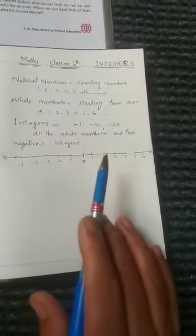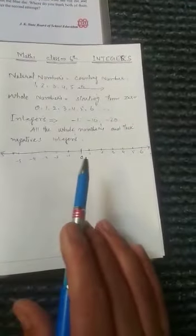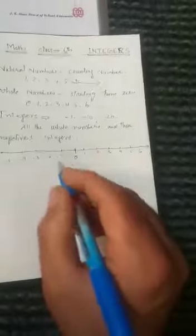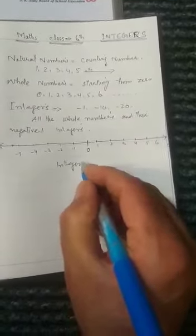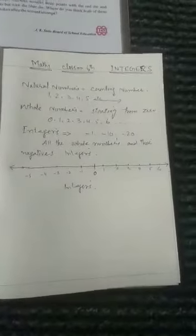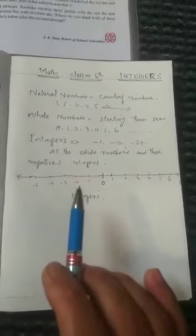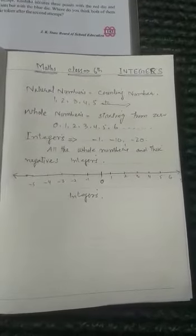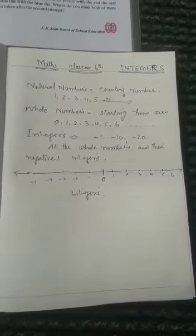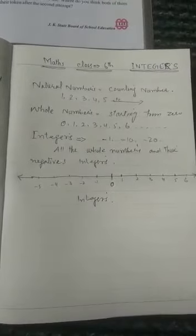All these numbers, whether they are positive or negative and including zero, are called integers. We also learned how to represent these numbers on a number line. In this chapter, we will learn about addition and subtraction of integers. Thank you very much.